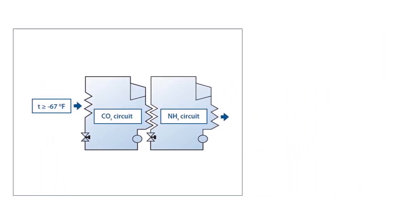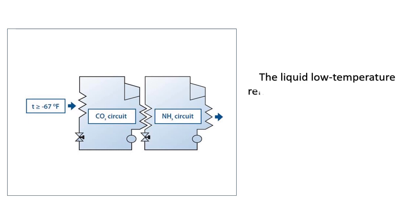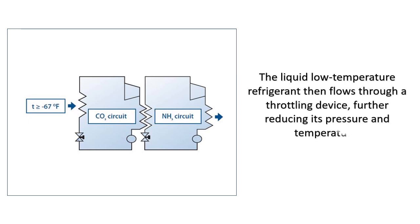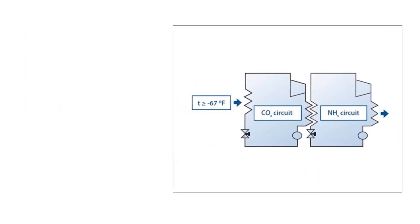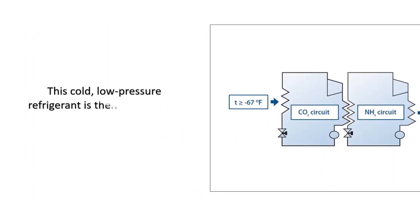The liquid low-temperature refrigerant then flows through a throttling device, further reducing its pressure and temperature. This cold, low-pressure refrigerant is then used to cool the desired process or equipment.